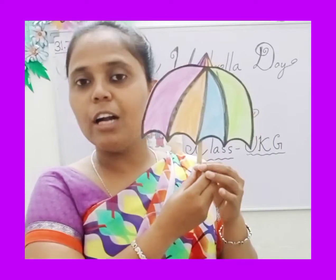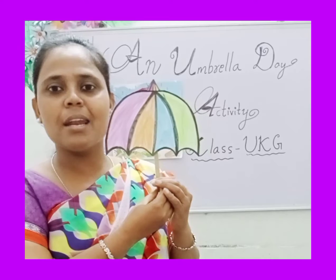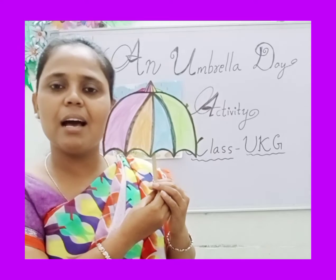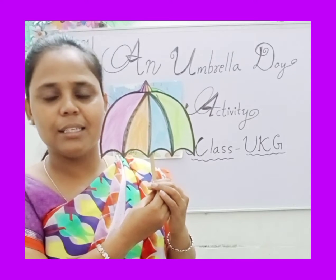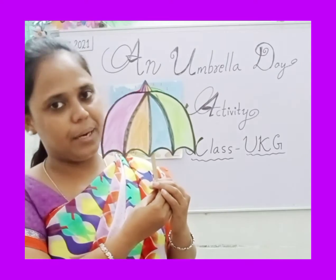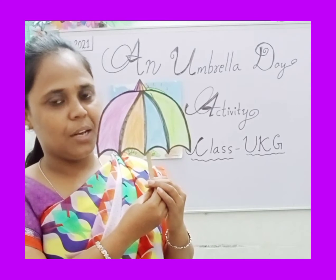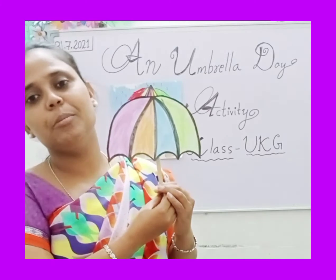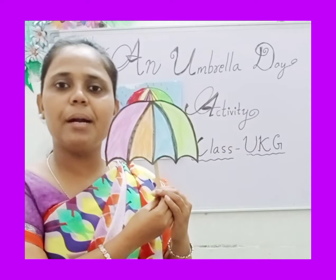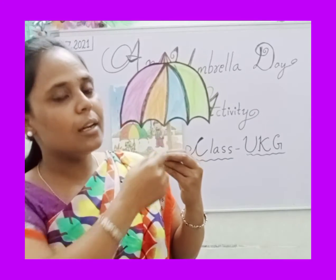Then tell me, what is this? This is an umbrella. Do you know that? आपको मालूम है, यह umbrella है? Umbrella मतलब छत्री. Hindi में छत्री और English में umbrella.